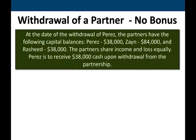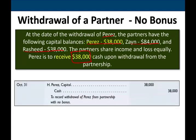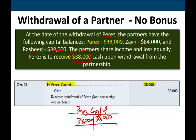Let's take a look at an example. At the date of the withdrawal of Perez, the partners have the following balances: Perez $38, Zane $84, Rashid $38. The partners share income and losses equally, and Perez is to receive $38. Perez's balance is $38 and Perez is getting $38 — their balance is $38 and they're receiving $38. So Perez's capital was $38 and now it's going to go down to zero and we'll give them cash. No bonus.